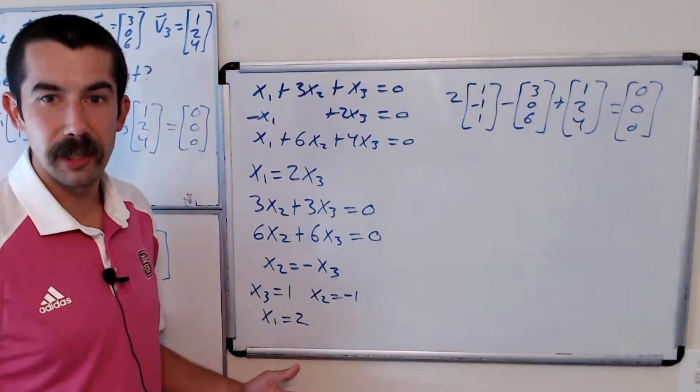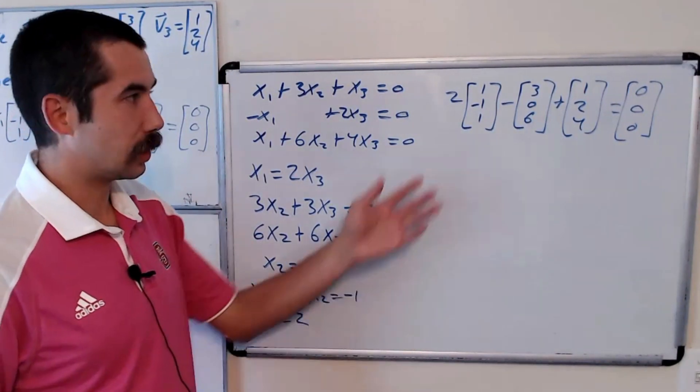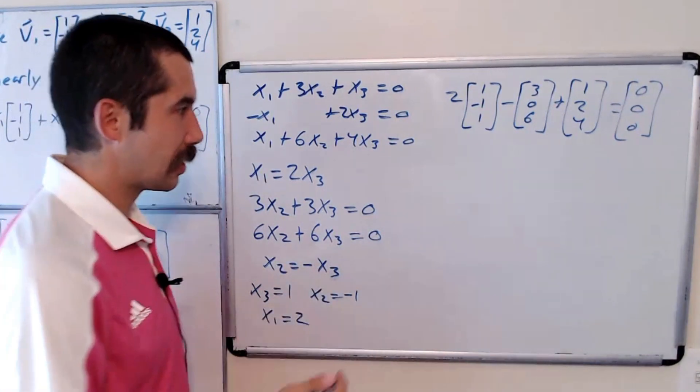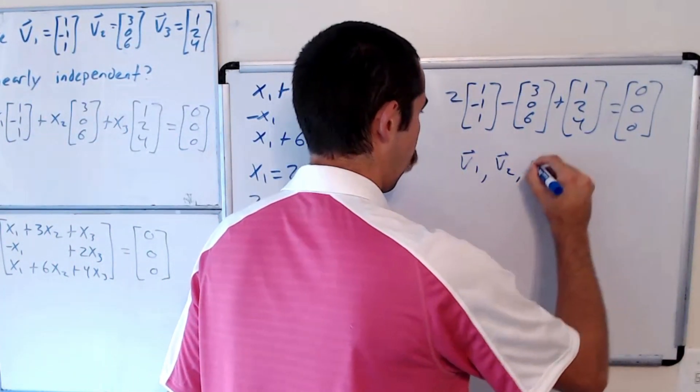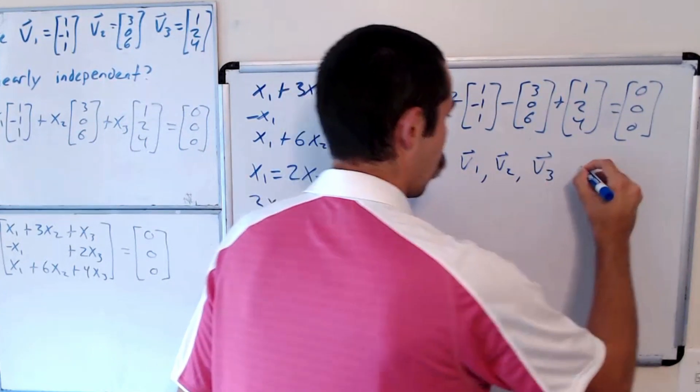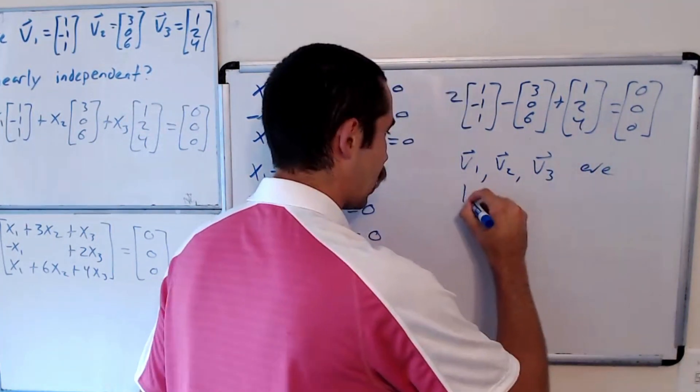So we found a non-trivial solution to that vector equation, which means the vectors v1, v2, and v3 are linearly dependent.